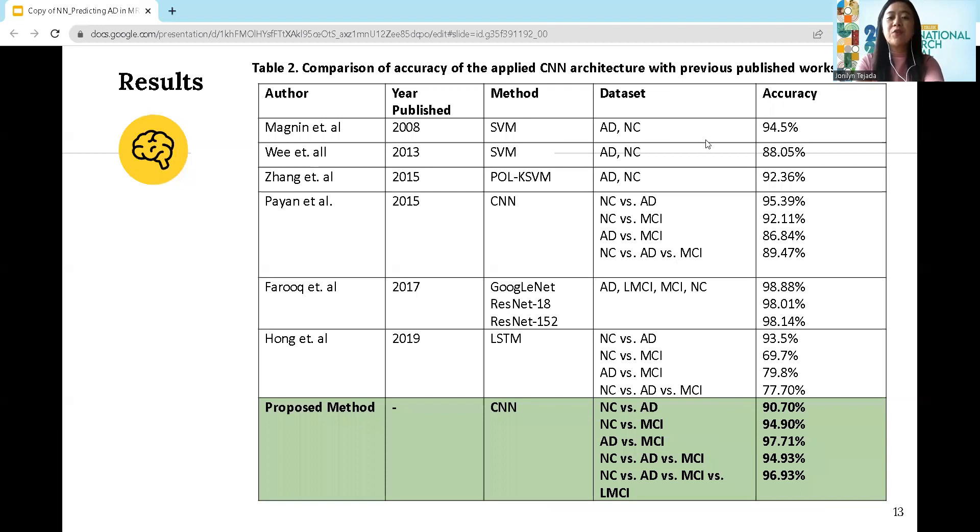For the literature review, some published studies have good accuracy. Magnin et al. used SVM to classify Alzheimer's disease versus healthy brain scans or early stages of Alzheimer's disease, achieving 94.5% accuracy.